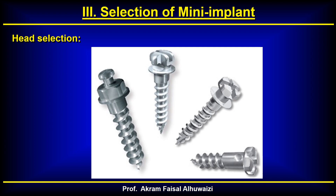Regarding head selection, this depends on the type of tooth movement or auxiliary you're going to use. If using power chain, a standard head is fine. If threading ligature wires, choose one with a hole. For wire bending, use one with brackets. Regarding the collar length: in the palate where soft tissue is thicker, a longer collar is advisable; in buccal regions where soft tissue is thinner, a short collar is preferable.